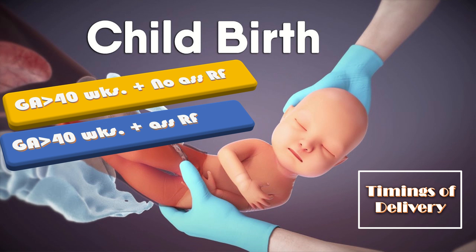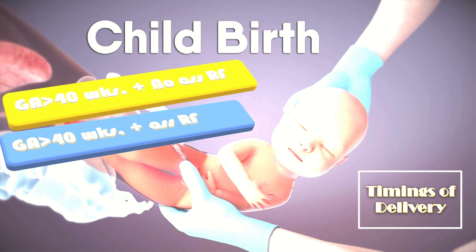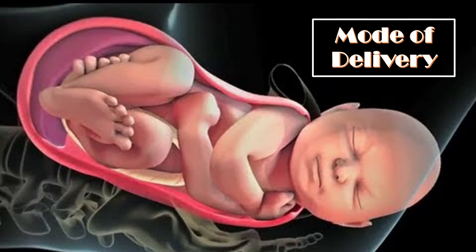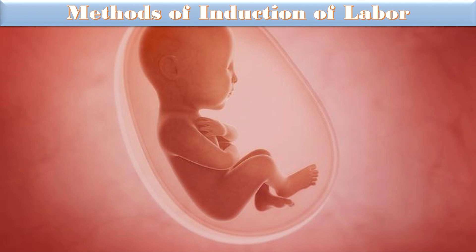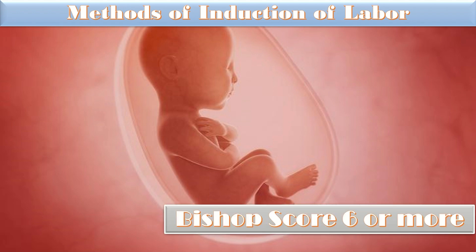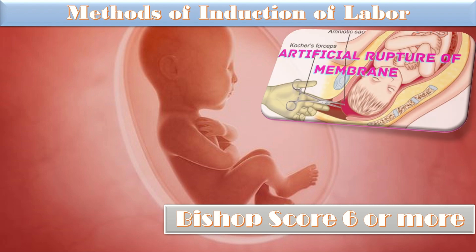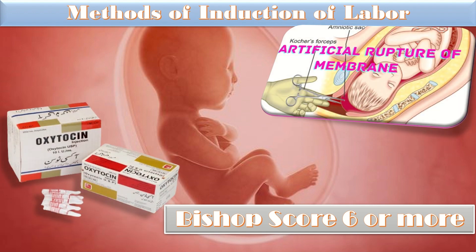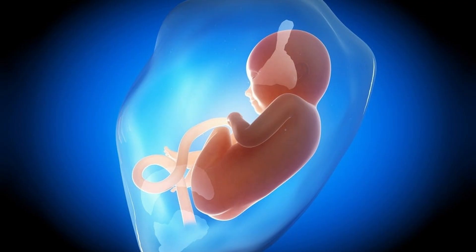The mode of delivery depends on the overall clinical presentation. If there is no contraindication to vaginal birth, we go for vaginal birth; if there is a contraindication, we go for cesarean section. If vaginal birth is planned and the Bishop score is less than 6, we discuss different methods of induction with the patient. If the Bishop score is 6 or more, we do ARM plus or minus syntocinon augmentation.